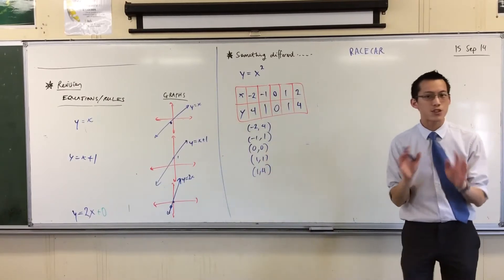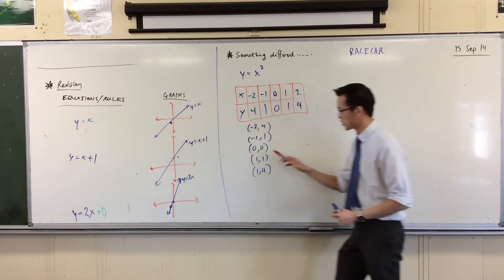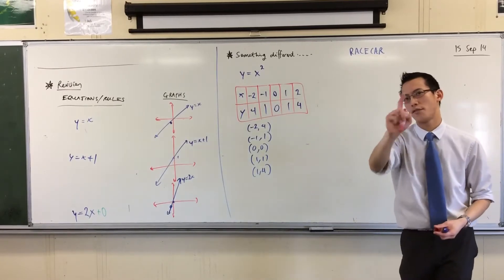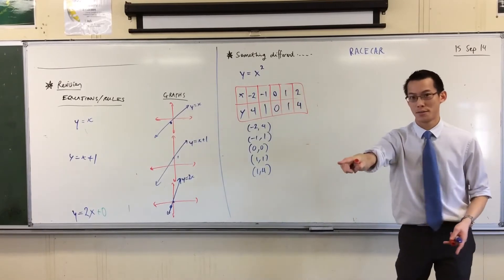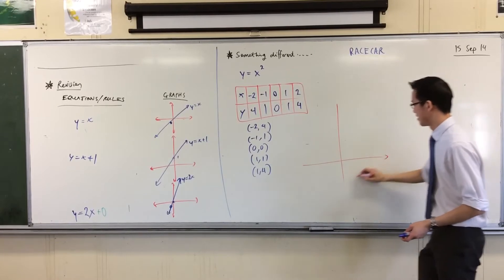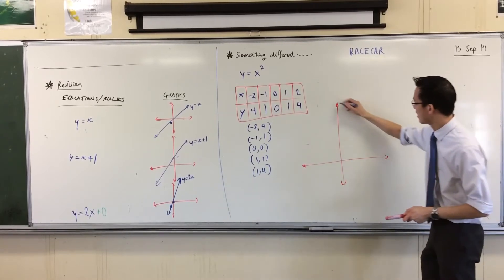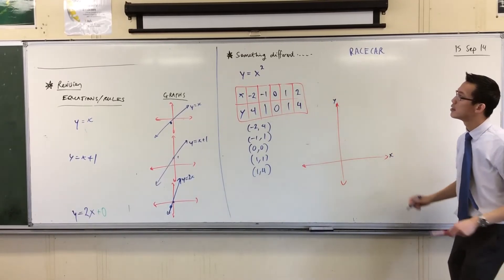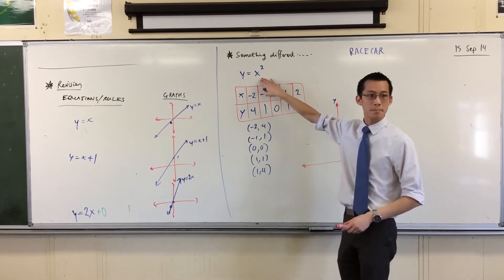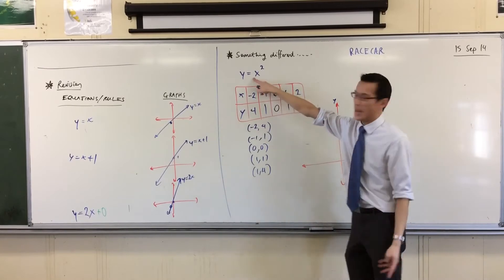Let's draw this thing. Draw yourself up a set of axes — maybe make it a bit bigger because we want some detail here. Actually, can you first draw this and then go? Draw fast. The proper wording would be: sketch the graph of y equals x squared.